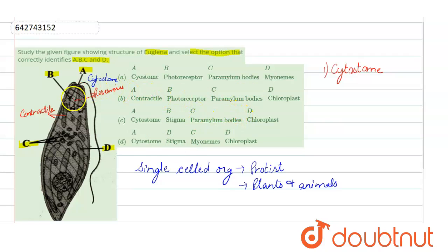Then is the photoreceptor. Where is the photoreceptor? Here is the photoreceptor. Then we will get back to the stigma. Where is stigma? Now this part is called stigma. That means the B option is called as stigma. The second we have found is stigma.